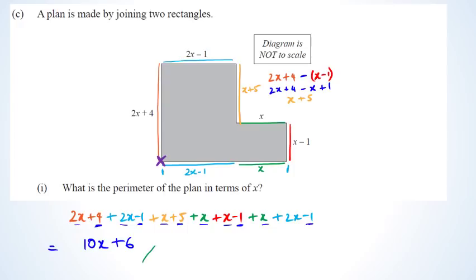When I found this question was worth an excellence, I was a bit shocked — I thought it was probably not more than a merit. But according to this exam, you get excellence if you answer correctly. For achieved, there are multiple possibilities: getting x + 5 can earn an achieved. For merit, if you found the perimeter but used one incorrect length, you can still get merit.